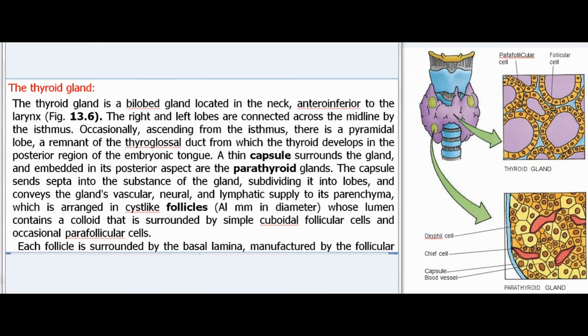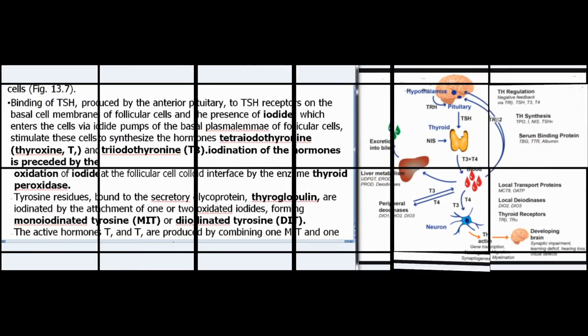The thyroid gland is a bilobed gland located in the neck, anteroinferior to the larynx. The right and left lobes are connected across the midline by the isthmus. Occasionally ascending from the isthmus is a pyramidal lobe — a remnant of the thyroglossal duct from which the thyroid develops in the posterior region of the embryonic tongue. A thin capsule surrounds the gland, and embedded in its posterior aspect are the parathyroid glands. The capsule sends septa into the substance of the gland, conveying vascular, neural, and lymphatic supply to its parenchyma, which is arranged in cyst-like follicles whose lumen contains colloid surrounded by simple cuboidal follicular cells and occasional parafollicular cells.